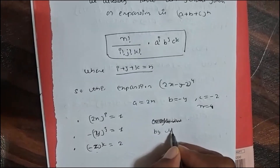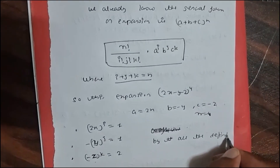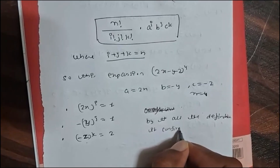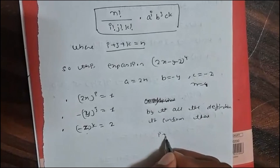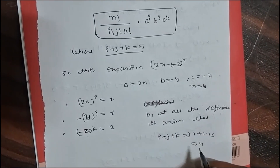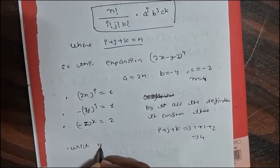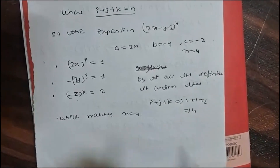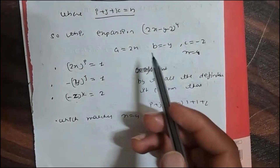By this definition, we confirm that i + j + k = 1 + 1 + 2 = 4, which matches n = 4. So now we know all the values and can substitute them into the multinomial expansion formula.